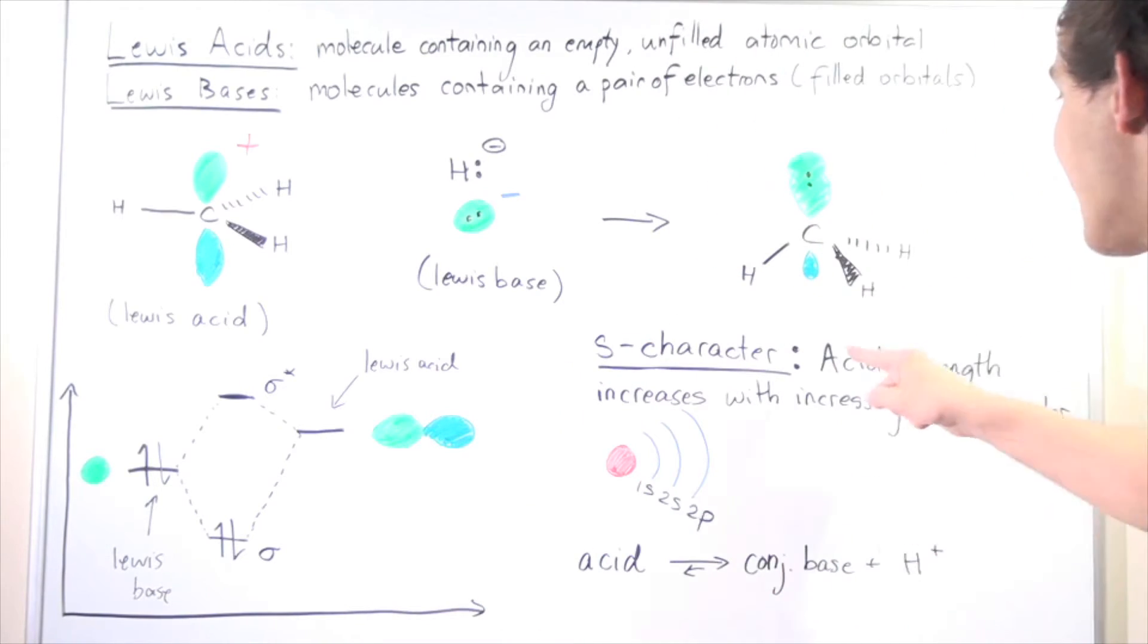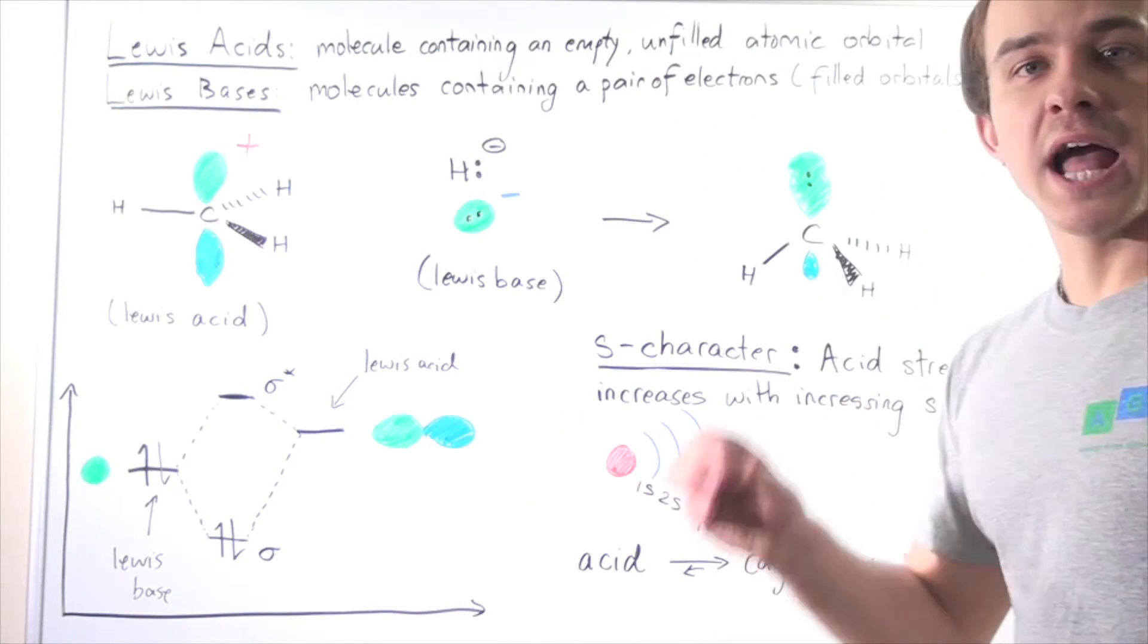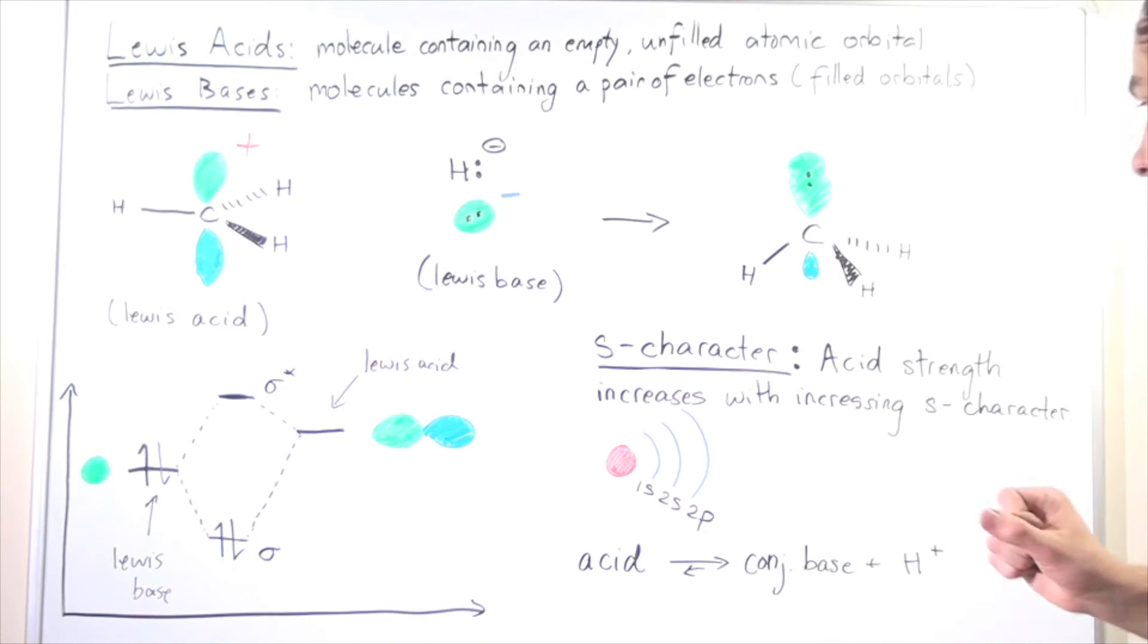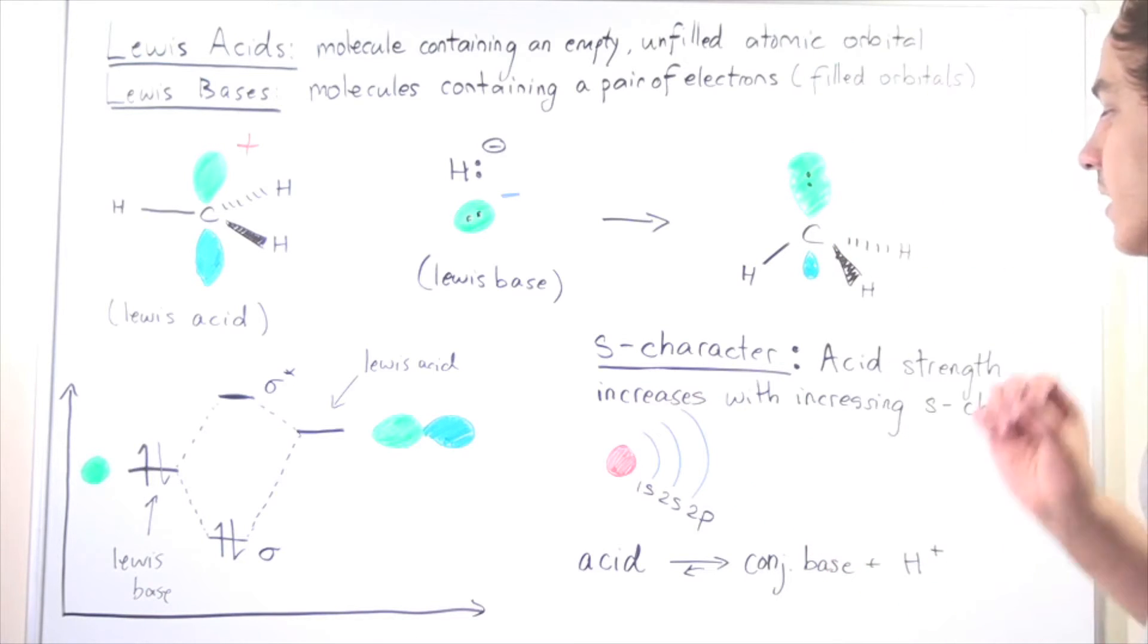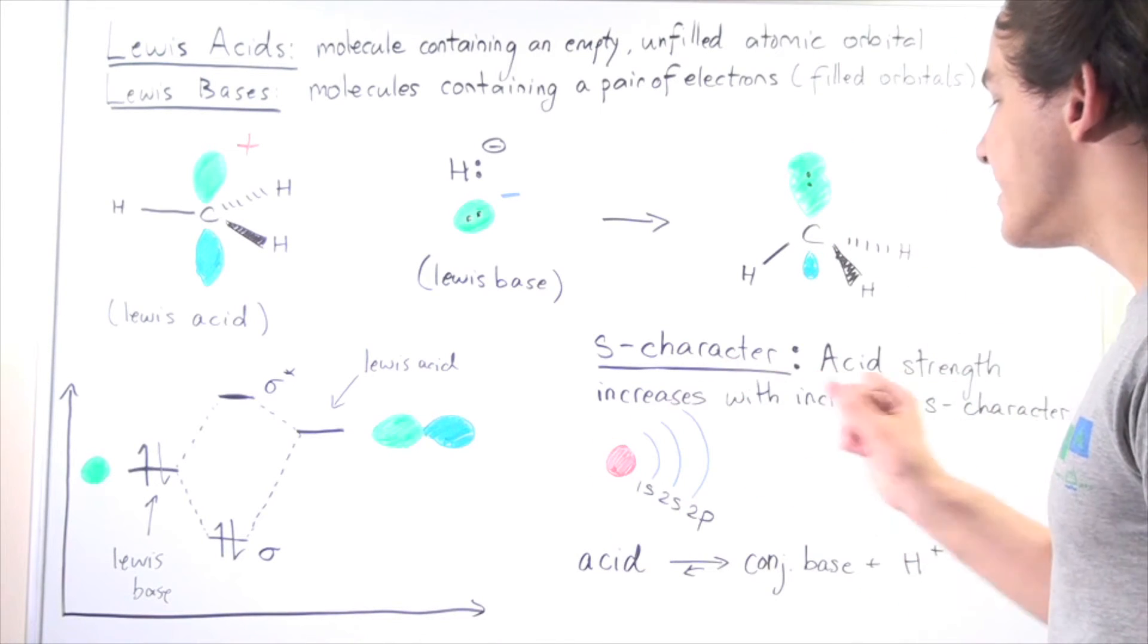Acid strength of a Bronsted-Lowry acid increases with increasing S character. So why is that? Well, to examine that, let's recall one simple concept.